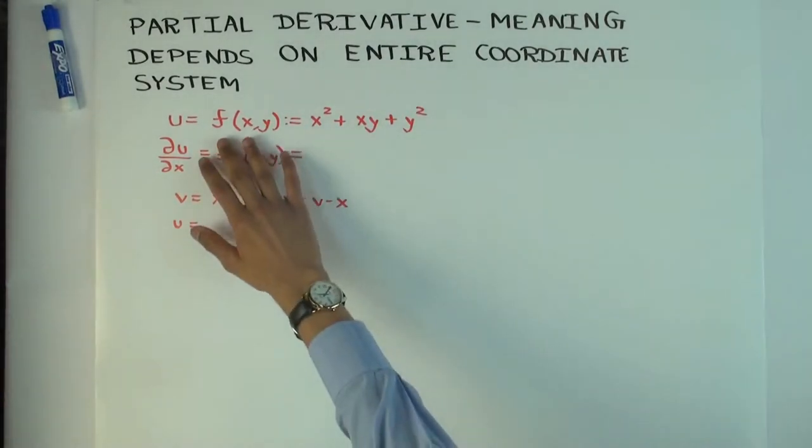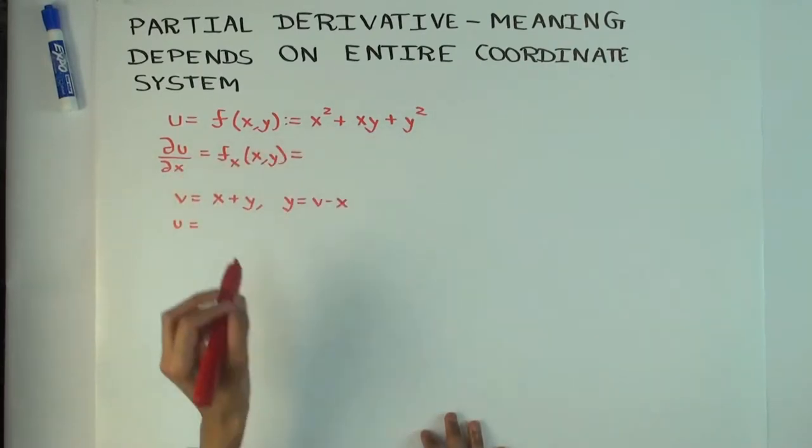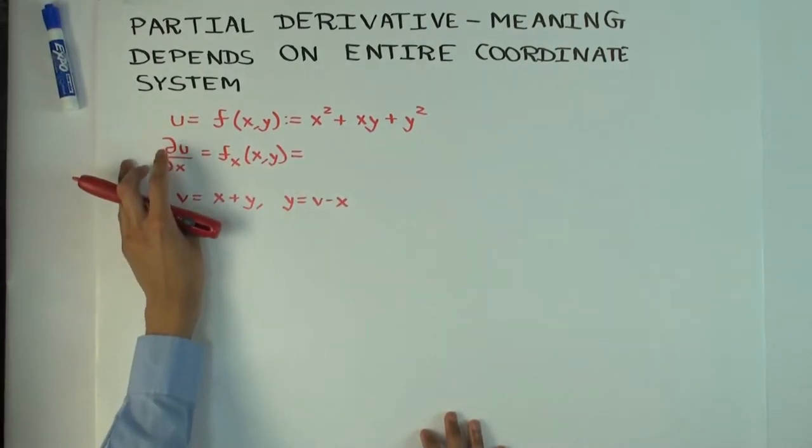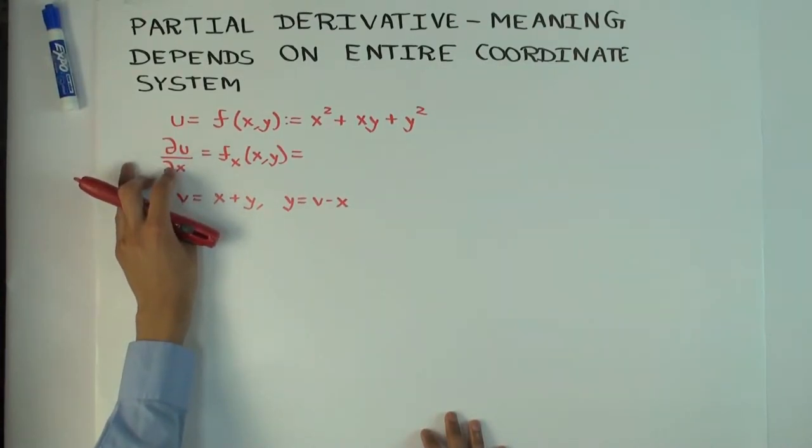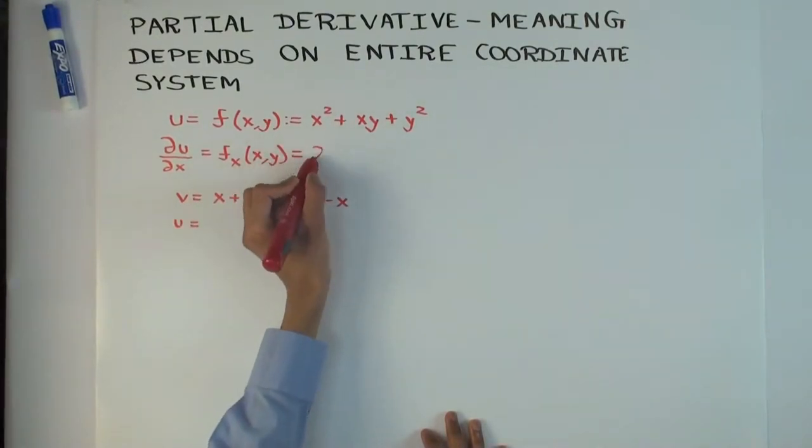So I'm going to consider a function of two variables, x and y, given like this: x squared plus xy plus y squared. Let's call it u, and the output is u, and now I want to find out what's the partial derivative of u with respect to x. So what's that? 2x plus y.